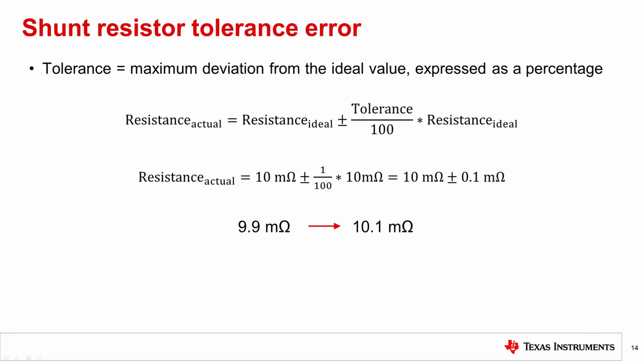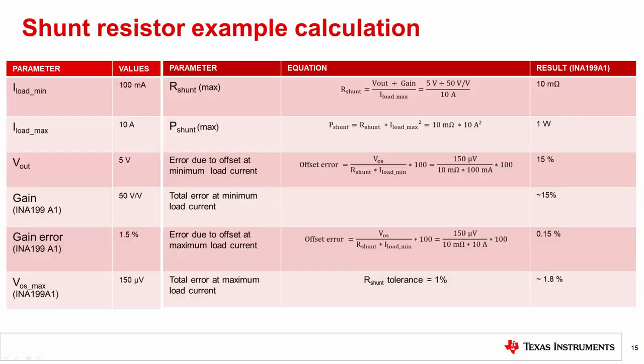Unlike the amplifier offset error, shunt tolerance error contribution is constant over the entire load current range. Now let's work through a real-world example to better understand what we have discussed so far.